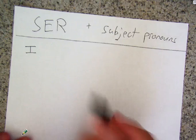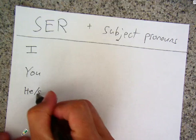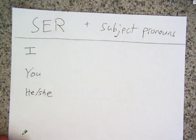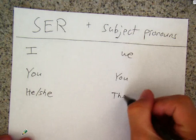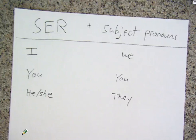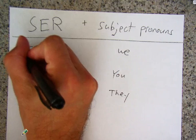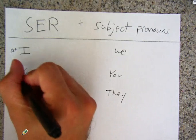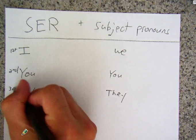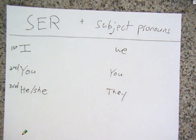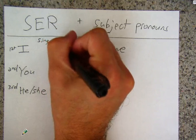The subject pronouns are I, you, he, and she — and then we, you, and they. Those are the subject pronouns we're going to work with for now. I is known as the first person. You is known as the second person. He or she is known as the third person. This is the singular category — just one person involved.